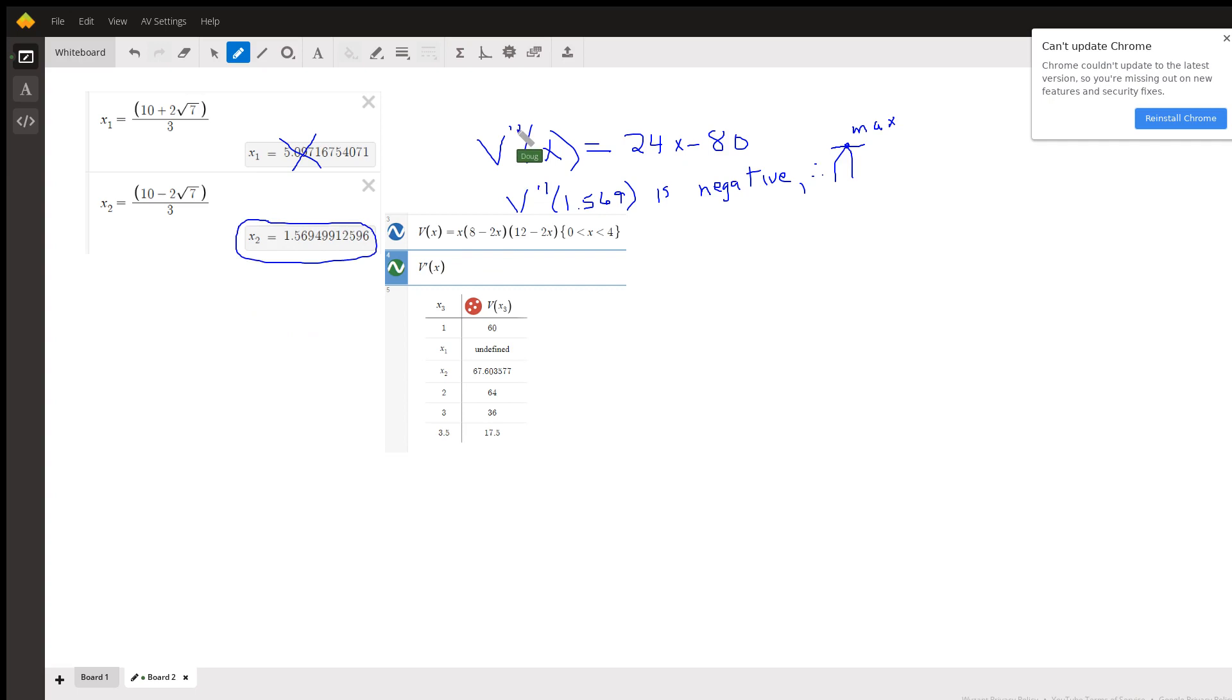If I take V double prime and apply the second derivative test, plugging this critical number into the second derivative, I can see that gives me a negative number, which means the curve is concave downward. So this 1.569 produces a maximum because that's where the horizontal tangent line is.